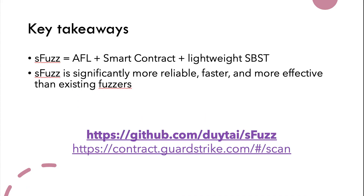The key takeaways of our paper are: we combine AFL, smart contract fuzzing, and lightweight SBST to create Sfuzz. It is significantly faster and more effective than existing fuzzers. The open-source code is available on GitHub. We also have an online version available on the Garstride website. This is the end of my presentation — thank you for listening.